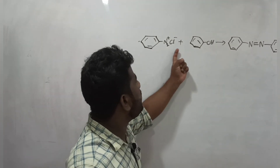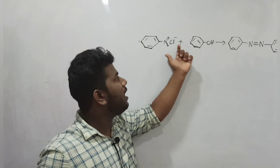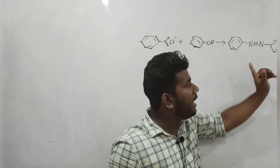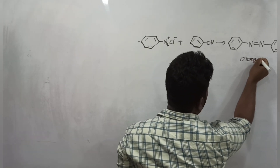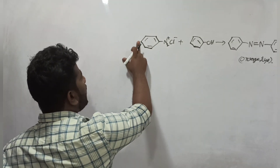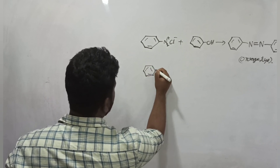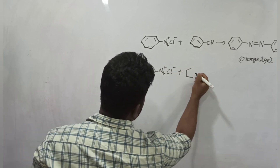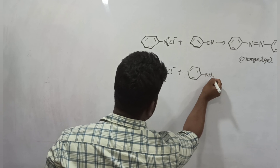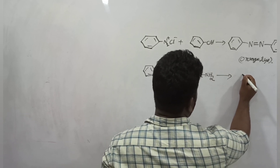These two benzene molecules are coupled — it's coupled with two benzene rings. This product is called parahydroxyazobenzene. It is an orange dye. The reactant is an amine — benzene diazonium chloride.